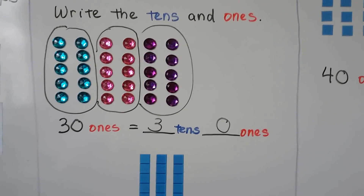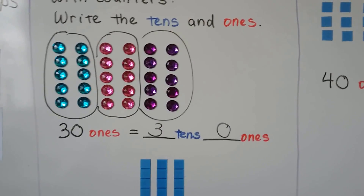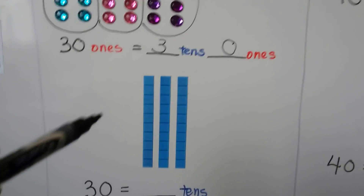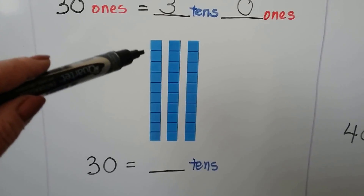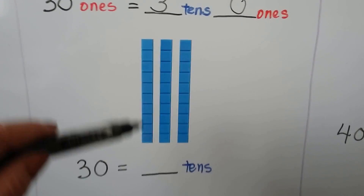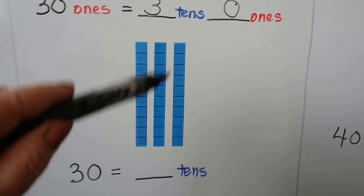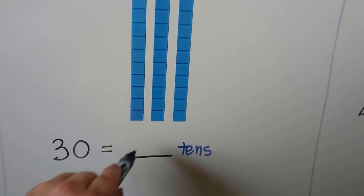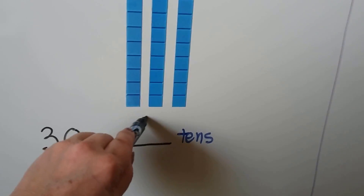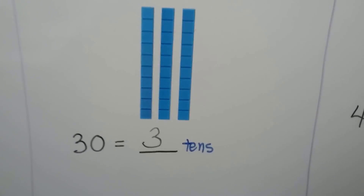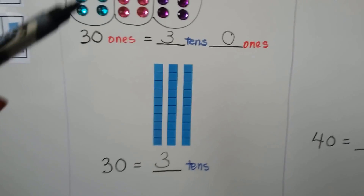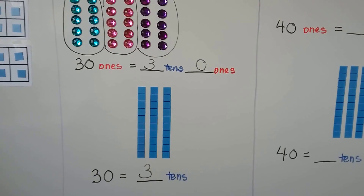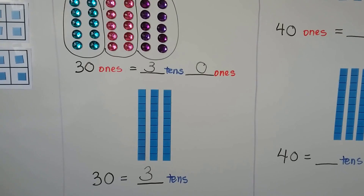Thirty ones is equal to three tens and zero ones. We can also have bars of ten — one, two, three bars of ten. That's three tens, and that's also thirty, just like the thirty ones. Three tens is equal to thirty.